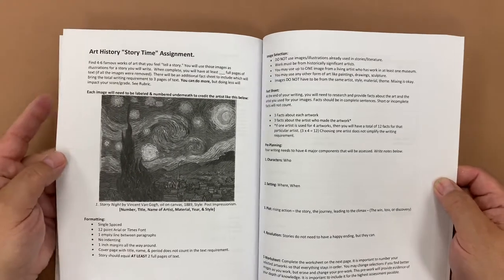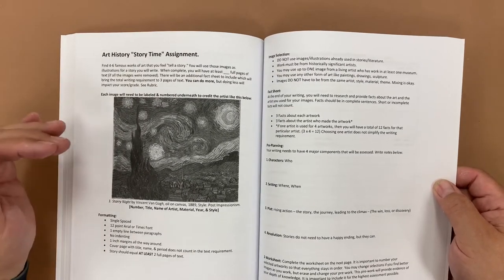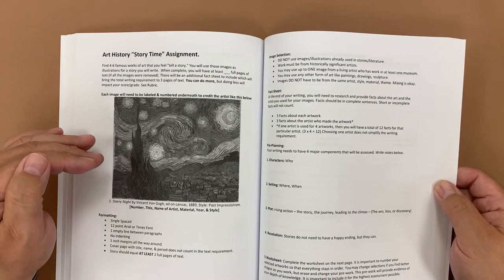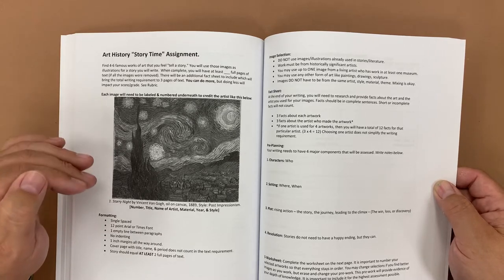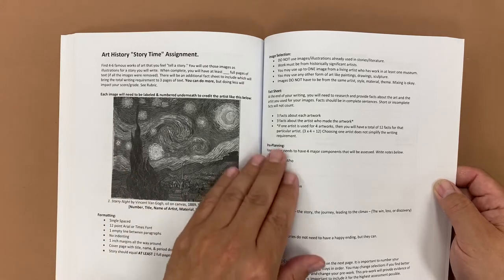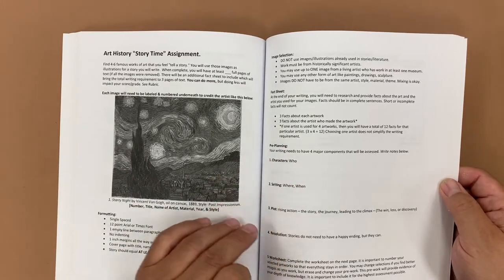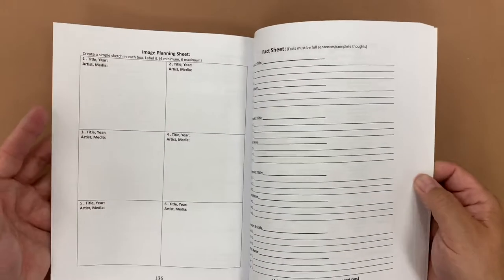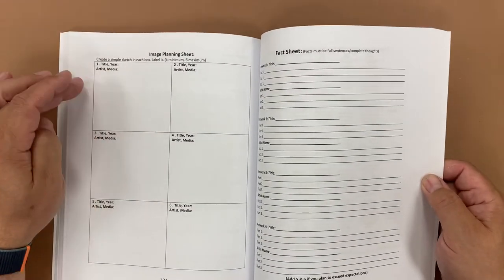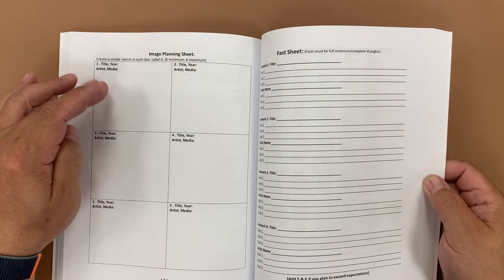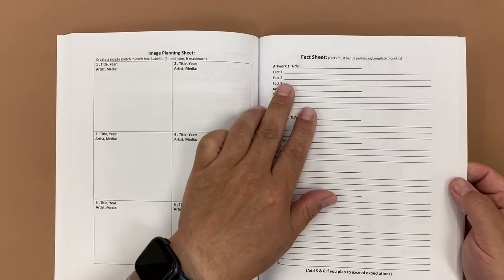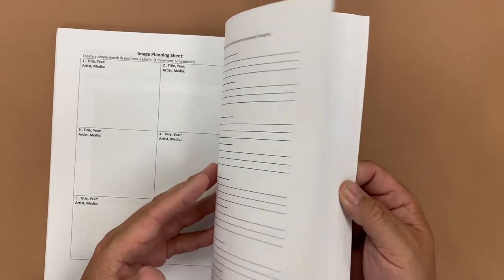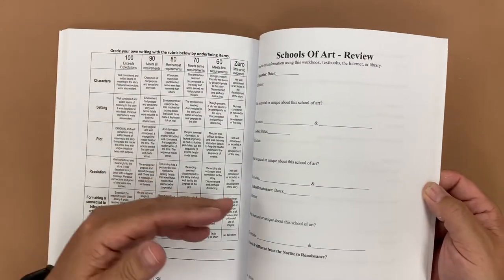I have another one where they could do instead a story where they take four famous works of art and use those as illustrations for a story that they would write about. We have some pre-planning pages where they could develop characters, settings, plot, and resolution. And then they would cut out examples of the famous works of art, label them, they would do research about the artist and the artwork. So then that goes along with their story. And of course a rubric.